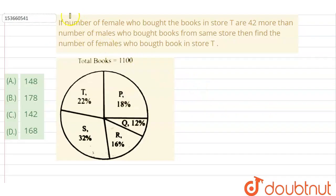Hello everyone. So the question says, if number of females who bought the books in store T are 42 more than number of males who bought books from the same store T, then find the number of females who bought books in store T.